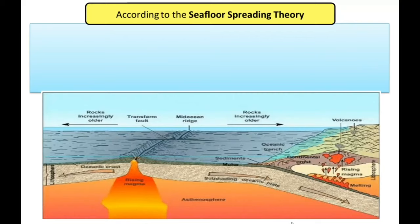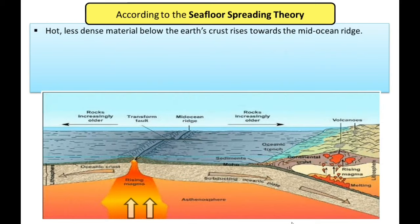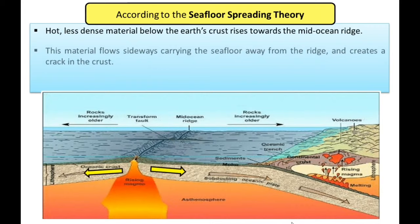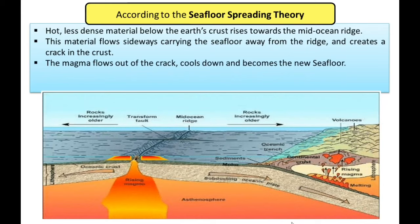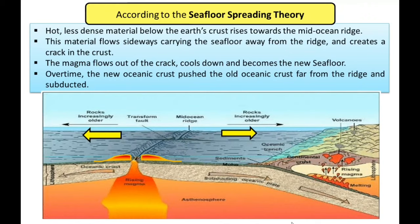According to the seafloor spreading theory, hot, less dense material below the Earth's crust rises towards the mid-ocean ridge. This material flows sideways, carrying the seafloor away from the ridge and creates a crack in the crust. The magma flows out of the crack, cools down, and becomes the new seafloor. Over time, the new oceanic crust pushes the old oceanic crust far from the ridge where it is subducted.